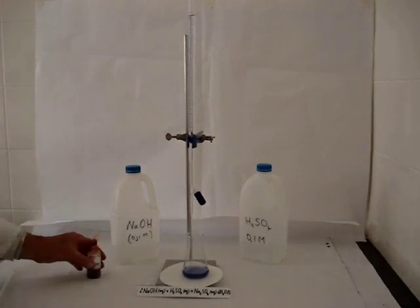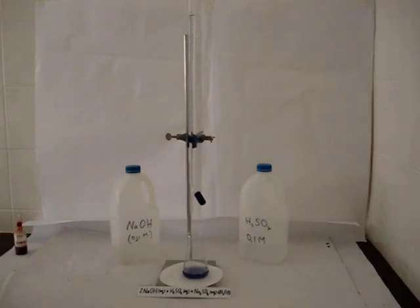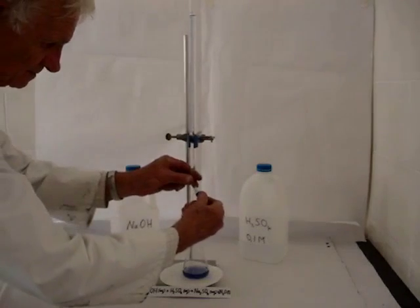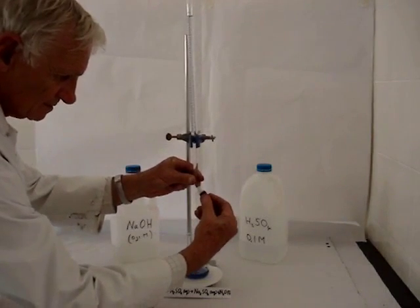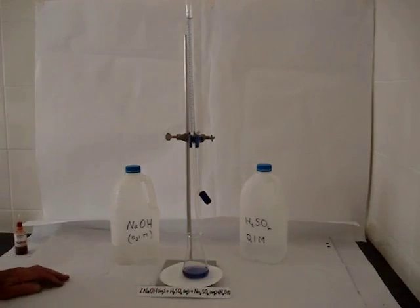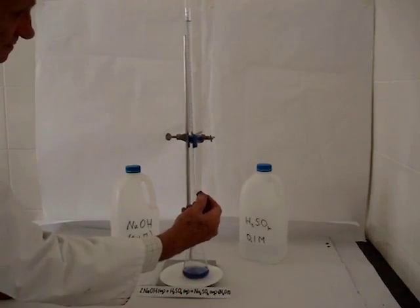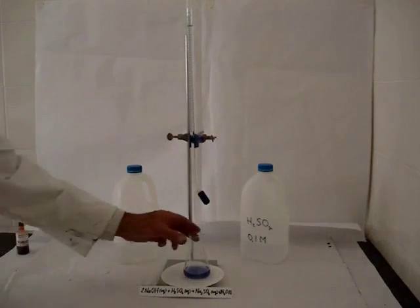Now we're going to add the sulfuric acid, drop by drop, by opening up the tap of the burette. That allows a little bit of sulfuric acid to come out at a time. And you'll notice that as that happens,